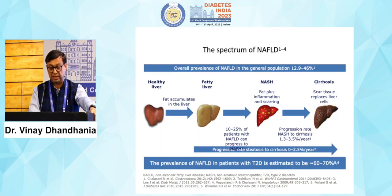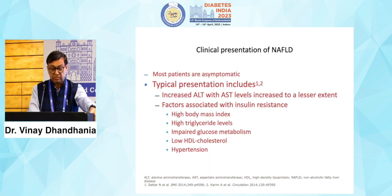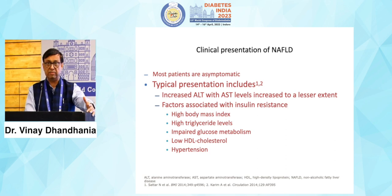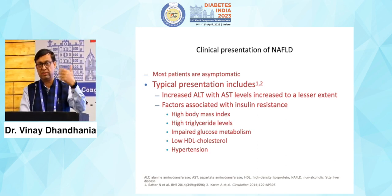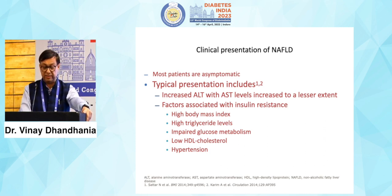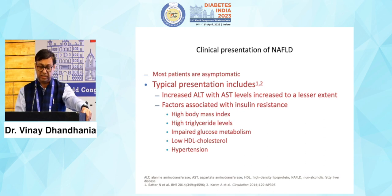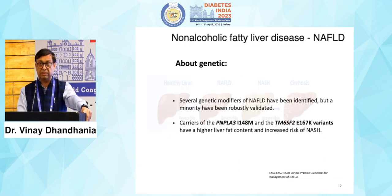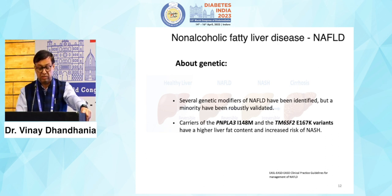The spectrum of NAFLD goes from healthy liver to fatty liver to NASH to cirrhosis to hepatocellular carcinoma. 70% of people will present with NAFLD only, 10–20% with NASH, and 1.3–3.5% progress to cirrhosis per year. Most patients are asymptomatic — they present with anemia, and on evaluation you find stool for occult blood positive, then on endoscopy they have varices. Factors associated with insulin resistance include high BMI and high triglyceride levels, markers of metabolic syndrome. Patients without insulin resistance can also have NAFLD due to genetic variants like PNPLA3 I148M and TM6SF2 E167K, which carry higher liver fat content and increased risk of NASH.